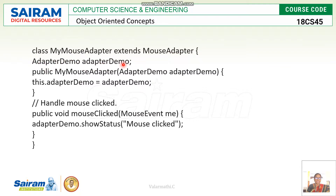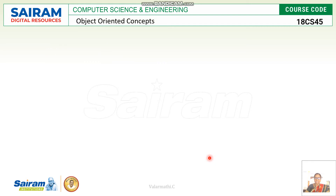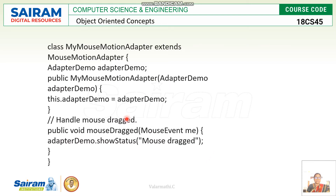We go through one example program using applet code. The class 'AdapterDemo' extends the adapter. In the init method of the applet, two listeners are added — MouseListener and MouseMotionListener — but instead of calling event classes, we call the adapter classes: MouseAdapter for MouseListener, and MouseMotionAdapter for MouseMotionListener. An object of AdapterDemo is created and assigned to the mouse adapter class. When the mouse is clicked, moved, or dragged, it shows the corresponding status messages. I hope this video is understandable. Thank you.